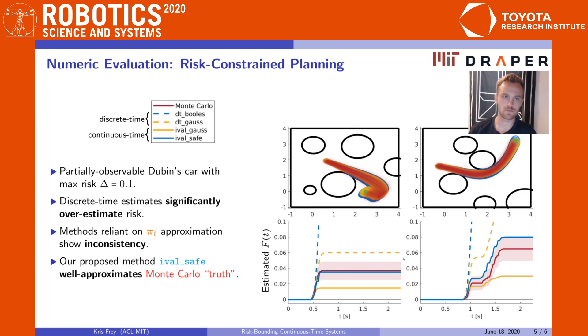In contrast, our proposed method, interval safe, is shown as a solid blue line and matches the Monte Carlo estimate well. When it does deviate, it tends to do so on the side of over-approximation, which is desirable from a safety perspective.